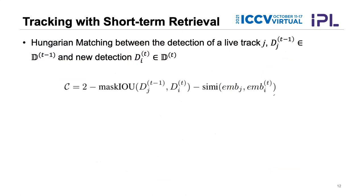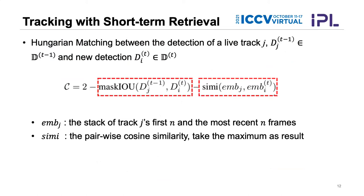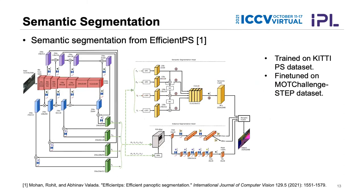For Hungarian matching, the cost function includes the mask IOU between detections of the live track in the last frame and current detections, plus the cosine similarity of features. Both mask IOU and cosine similarity use features from the first N and most recent N frames of each track. This cost function formula is used for the Hungarian algorithm.